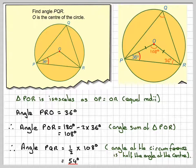So this has been a video to show you how to use an isosceles triangle and then use the resulting angle to find an angle at the circumference. I hope you've understood and I thank you very much for watching.